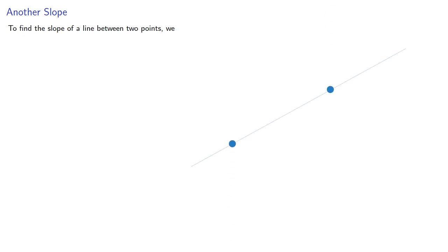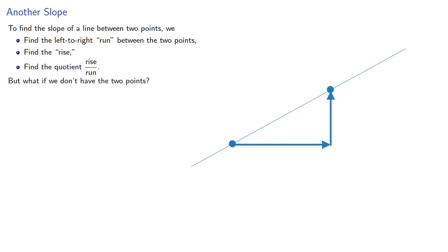To find the slope of a line between two points, we find the left to right run between the two points, find the rise, and then find the quotient rise over run. But what if we don't have the two points?